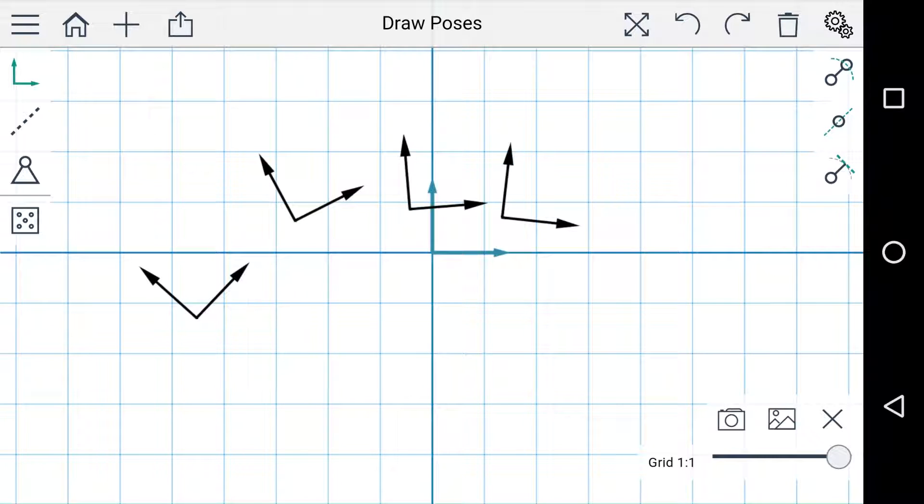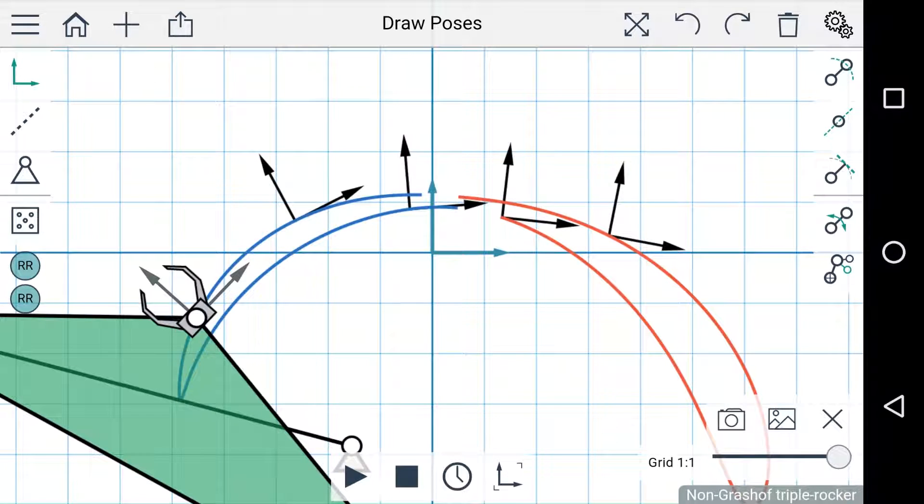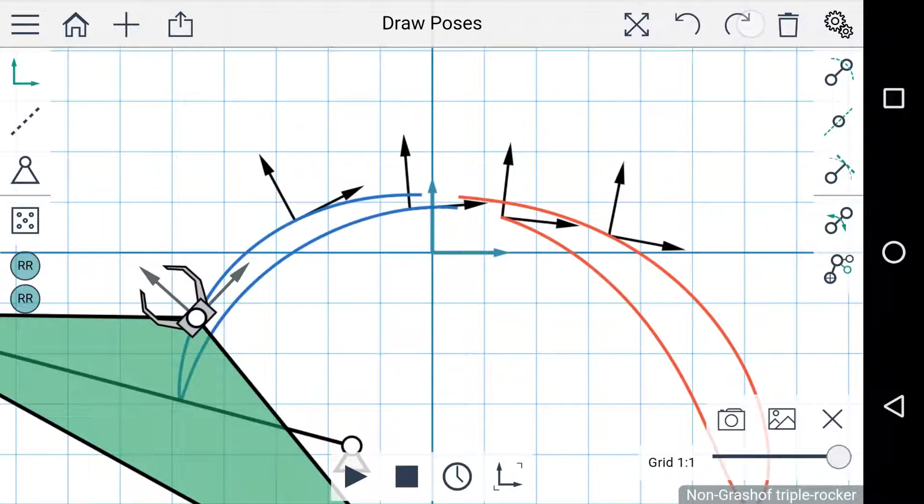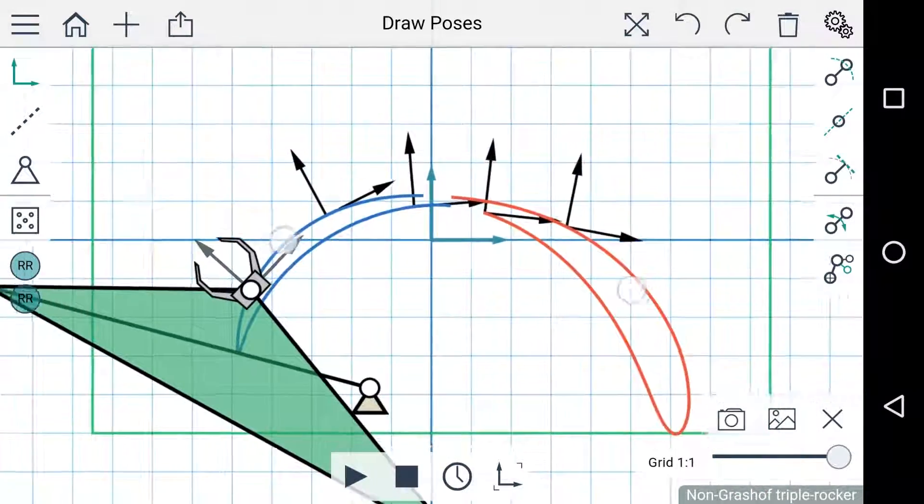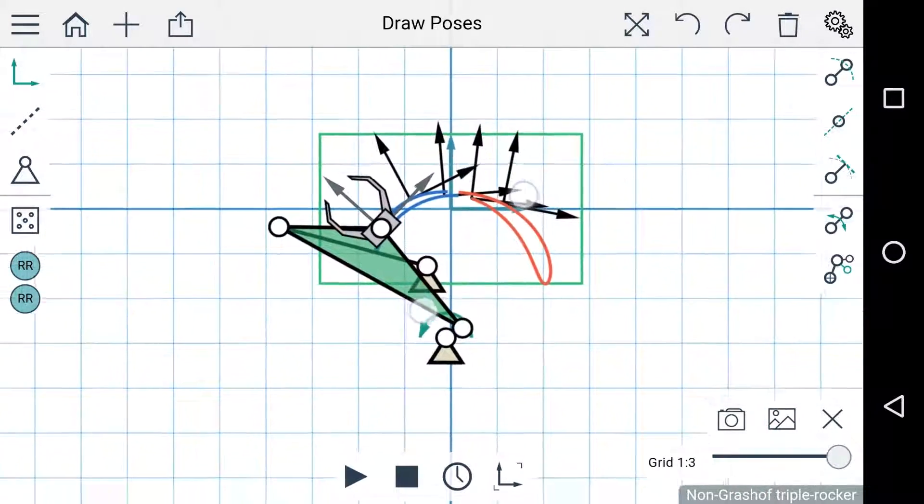Moving further to the left there are buttons to undo and redo the last actions, so I can undo and redo deleting that pose. To the left of that is the button to reset the view, so if I zoom out really far here, I can press that button and the view is reset.